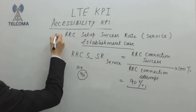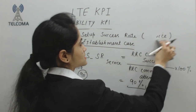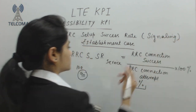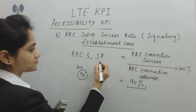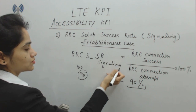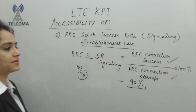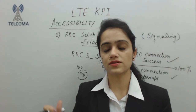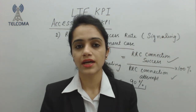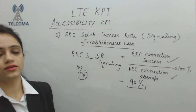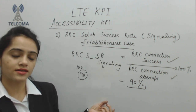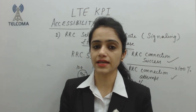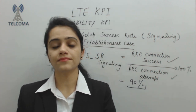The second KPI is also RRC-related but for signaling. The formula is: Total Number of Successes / Total Number of Attempts × 100%. KPIs are always measured in percentage because we need a calculation factor — the total number of requests versus total attempts or failures. That's why we measure these KPIs in percentage form. Next is the ERAB Setup Success Rate.